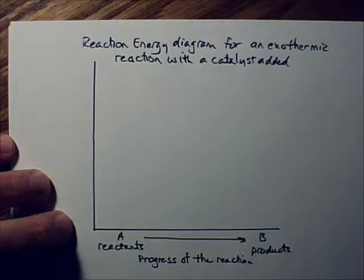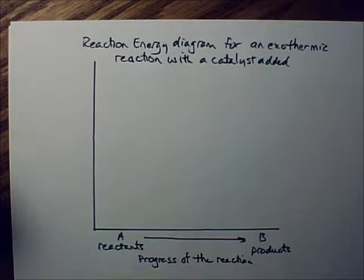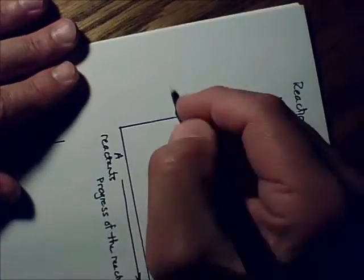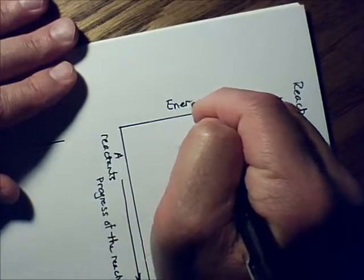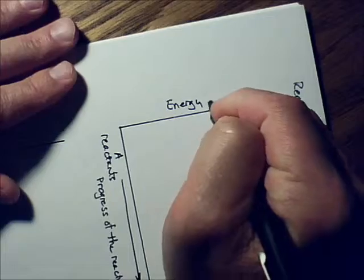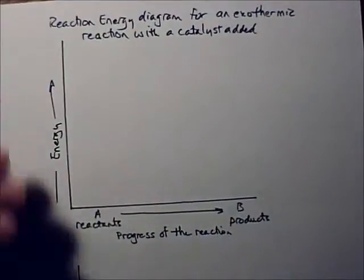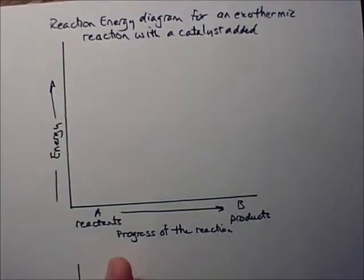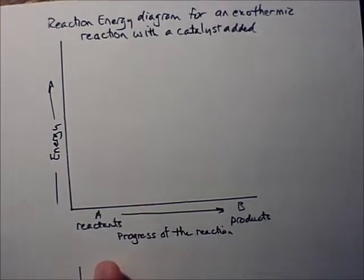What we're looking at is the energy in the system as the reaction progresses. So we have energy on the y-axis. This is the delta — in this case, the delta H, the enthalpy, the change in enthalpy.